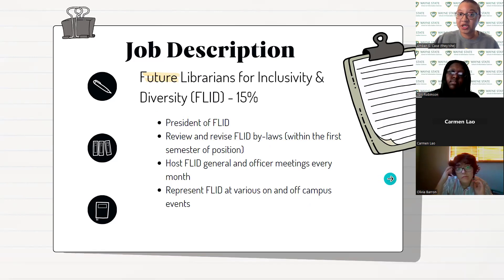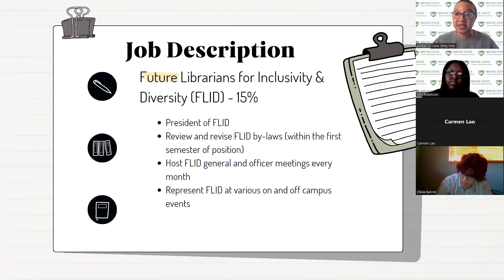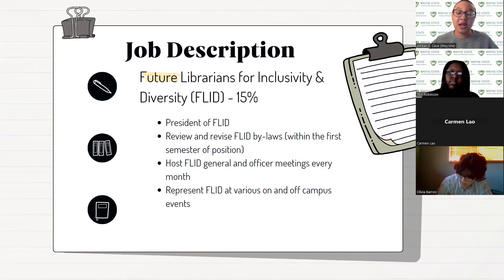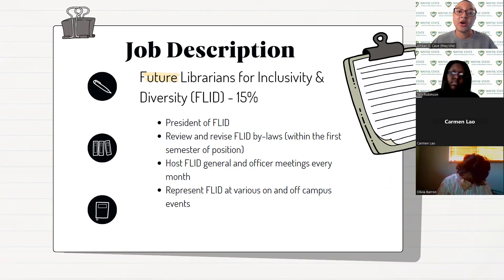The GSA is automatically president of FLID — Future Librarians for Inclusivity and Diversity. At the beginning of their position, they will need to review and revise the FLID bylaws. They host general and officer meetings for FLID every month, handle event planning, and represent FLID at various on and off campus events.